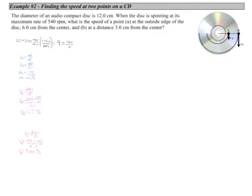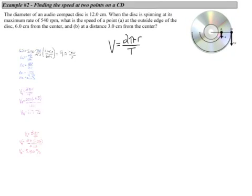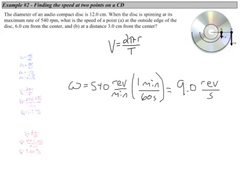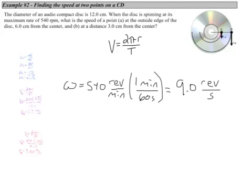Let's take a look at an example. Here the diameter of a compact disc is 12 centimeters. When the disc is spinning at its maximum rate of 450 RPM, revolutions per minute, what is the speed of a point at the outer edge of the disc, 6 centimeters from the center, and at a point 3 centimeters from the center? So this is asking about the speed, or the linear speed, of these two points here. So we need to use circumference over period in order to figure that out. Now both points have an angular velocity of 540 revolutions per minute, so we have to use that to find our period. So if we take 540 revolutions per minute and convert that to our standard units for angular velocity, we get 9 revolutions per second.